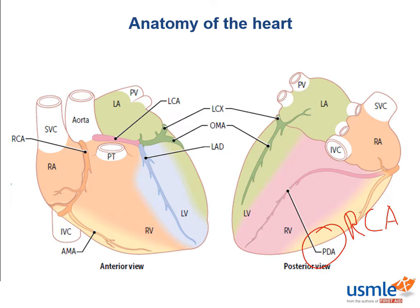Do not worry about memorizing these percentages, just remember that most people are right dominant. If it helps you, you can remember that most people are right handed, and just like most people are right handed, the right coronary artery is the dominant side of the heart and usually gives rise to the posterior descending artery.